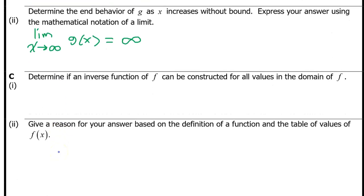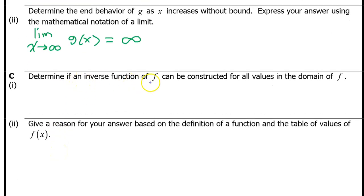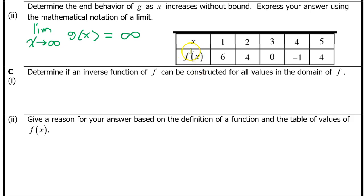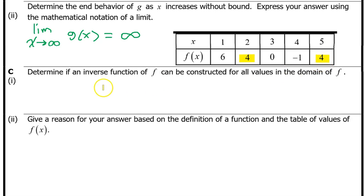C part 1: determine if an inverse function of f can be constructed for all values in the domain of f. This table represents all values in the domain of f. If any of the output values repeat, then no inverse function can be constructed. We notice that the output value of 4 repeats — f at 2 is 4 and f at 5 is also 4. So no inverse can be constructed.